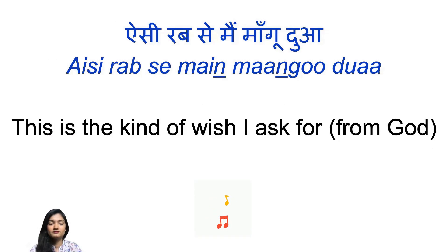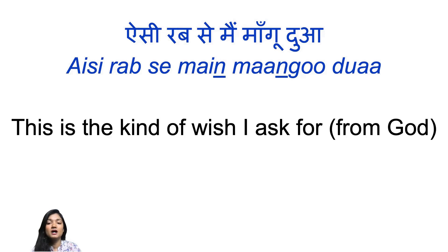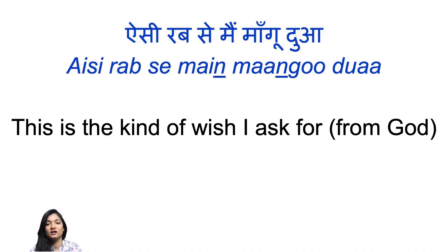Aisi rab se mein maangu dua. Aisi means like this, this kind, this sort of. Rab is another word for God — rab se means from God. Mangu comes from maangna, which means to ask for, and dua is prayer or wish. So: this is the kind of wish I ask for from God — that I should not let you go, I should not lose you. Try to connect all the sentences once you understand the translation — once you rearrange them, it will be clearer.